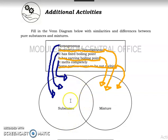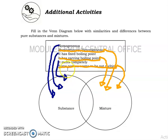For the additional activities: a substance is homogeneous, has a fixed boiling point, and melts completely. A mixture may be homogeneous or heterogeneous, has a varying boiling point, and some portions may not melt completely. That's all about substances and mixtures for Part 3 — stay tuned for more. Goodbye and enjoy learning!